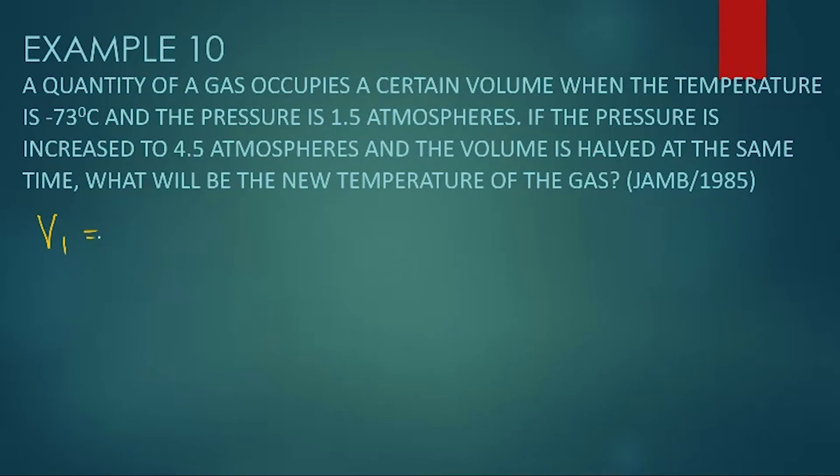A quantity of gas occupies a certain volume when the temperature is minus 73 degrees Celsius. The first thing you need to do is volume 1, which is volume occupied, equals V.